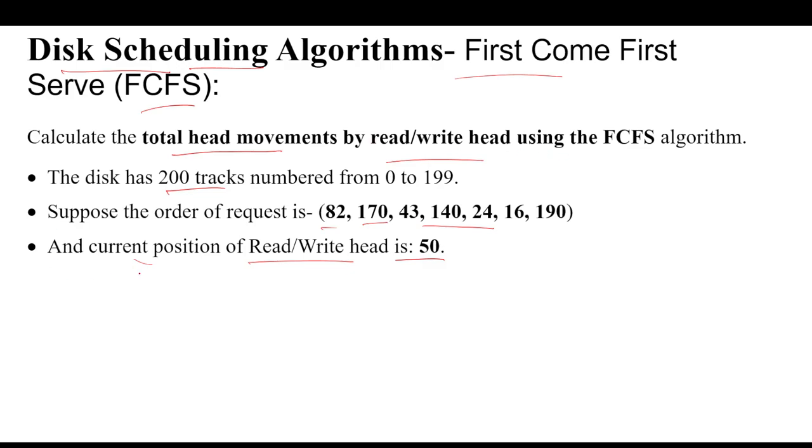In this case, we simply draw the particular number of tracks which start from zero. This is our starting position. From 0 to 199, these total tracks are there. Where is the current position of the read/write head? Here, 50. So this is the current position.